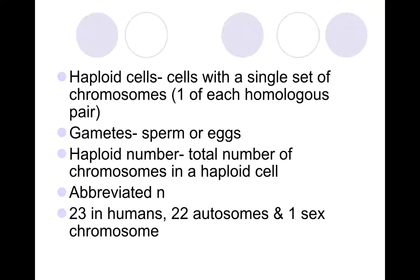Next we have haploid cells, also known as gametes or sex cells. They only have one of each of the homologous pairs — a single set of chromosomes. These are sperm or egg cells and have the haploid number, depicted as the letter N — half the number of the diploid cell. In humans that's 23: 22 autosomes and one sex chromosome.